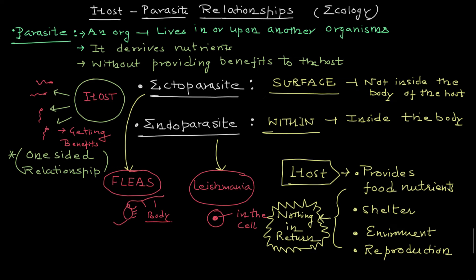You might ask why this relationship establishes in the first place — why is the host allowing the parasite into this relationship? The answer is the host is not interested in this relationship. The parasite is the one forcing it. Once the parasite establishes this relationship, it becomes hard for the host to remove it, and during that process the parasite causes a lot of damage to the host.